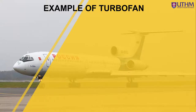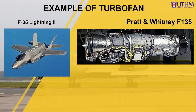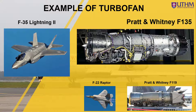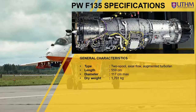Now we look into an example of a turbofan engine. A good example is the Pratt & Whitney F-135 engine, which is currently used on the F-35 Lightning II jet fighter, the newest jet fighter produced by the United States. This engine is developed from the older Pratt & Whitney F-119 engine, which is used by the F-22 Raptor, another modern fighter produced by the United States.